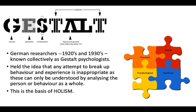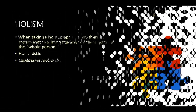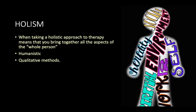This view is shared by humanistic psychologists, who saw successful therapy as bringing together all aspects of the whole person. Holism is the idea that you can't — and it's actually inappropriate to — separate the human. You need to analyze the whole person or the whole behavior. When taking a holistic approach, you bring together all aspects: the spiritual, the social, the behavioral side. It is humanistic and uses a lot of qualitative methods — we're interested in the experience, not just breaking things down into data.